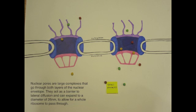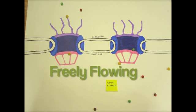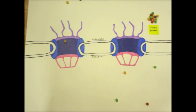Nuclear proteins are often made in the cytoplasm and use nuclear pores to enter the nucleus. As shown, small proteins easily enter the nucleus through the nuclear pore complex.